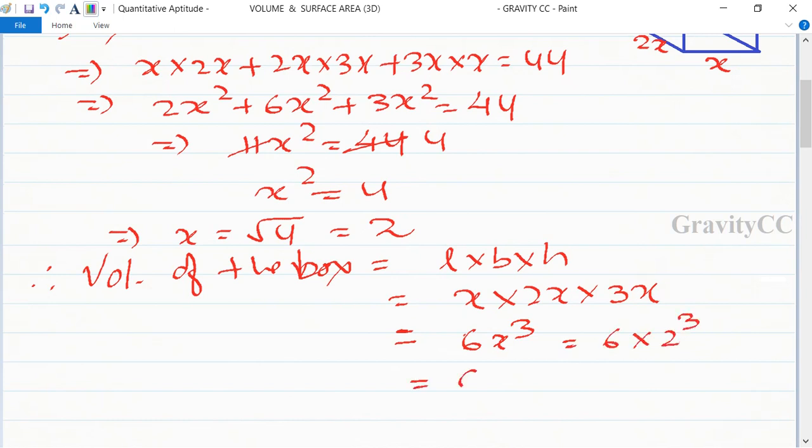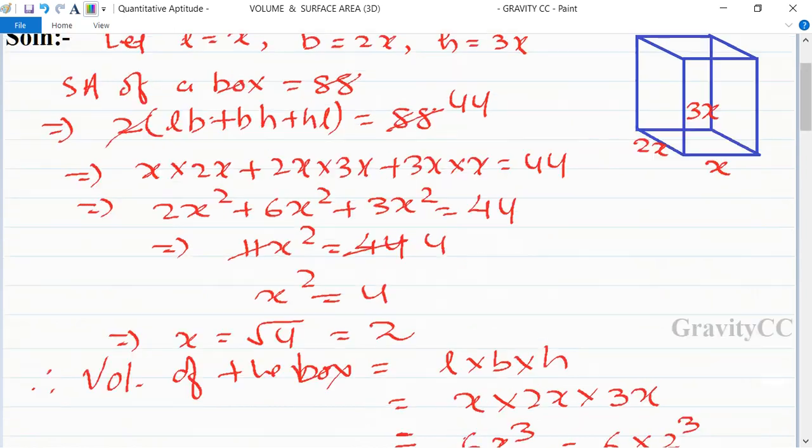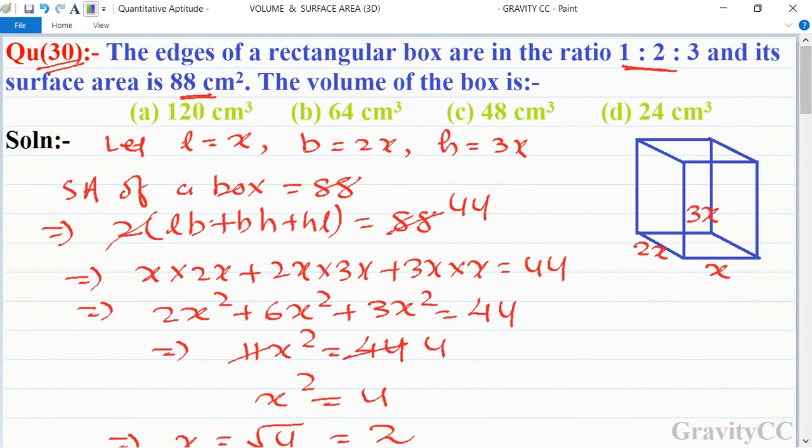so 2³, so 6 into 8, and 8 × 6 is 48 centimeter cube, which is the required answer. So option c is the correct answer.